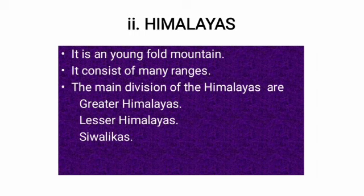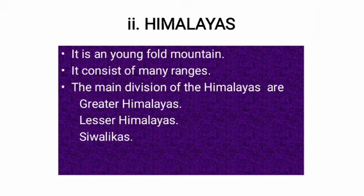The Himalayas. They constitute the core part of the northern mountains and are a young fold mountain. They were formed by the movement of the Angara landmass in the north and the Gondwana landmass in the south. The Tethys Sea found between these two landmasses was uplifted by compression, and the resultant landform was the Himalayas. The main divisions of the Himalayas are the Greater Himalayas, the Lesser Himalayas, and the Siwaliks.